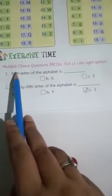Number 1. Fifth letter of the alphabet is. A: F, B: G, C: E. Fifth letter is E. Here we will put it.